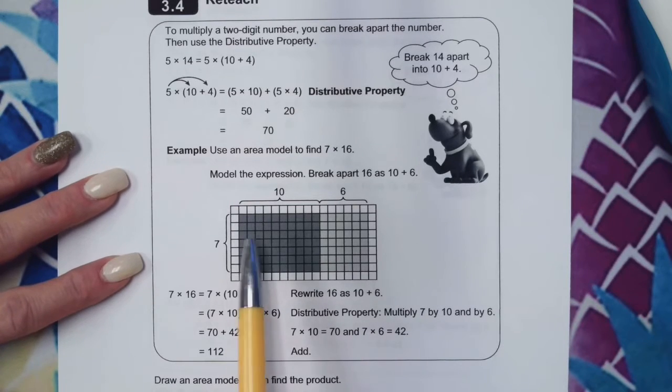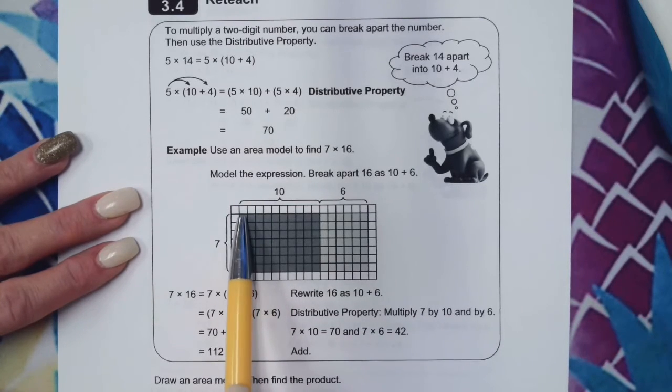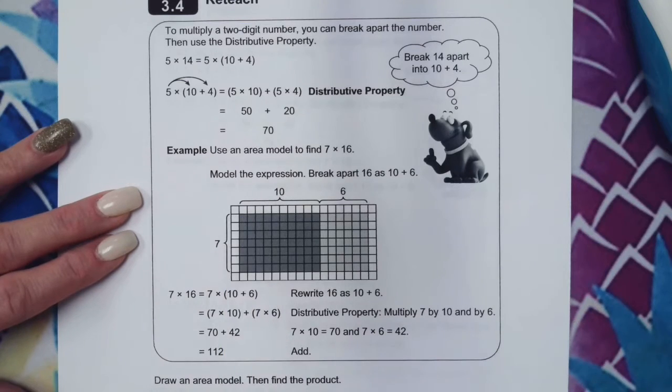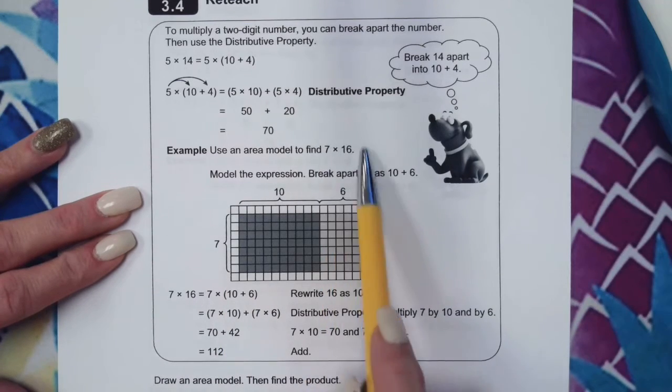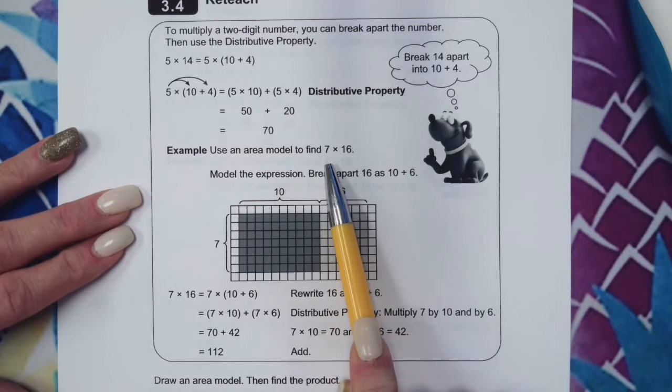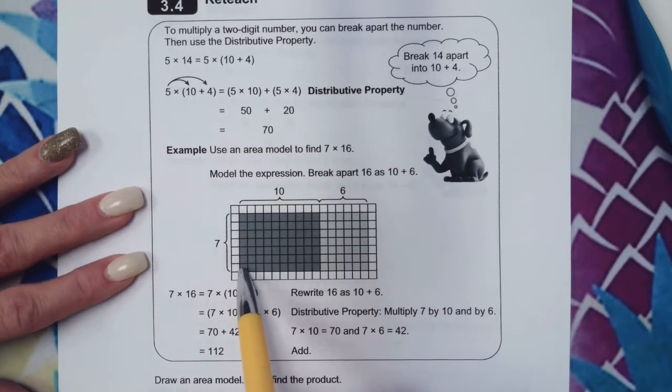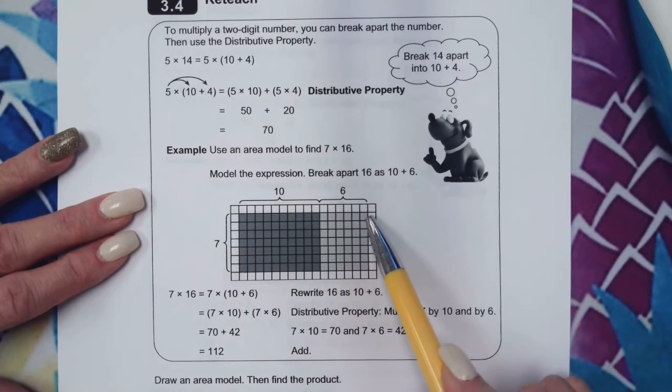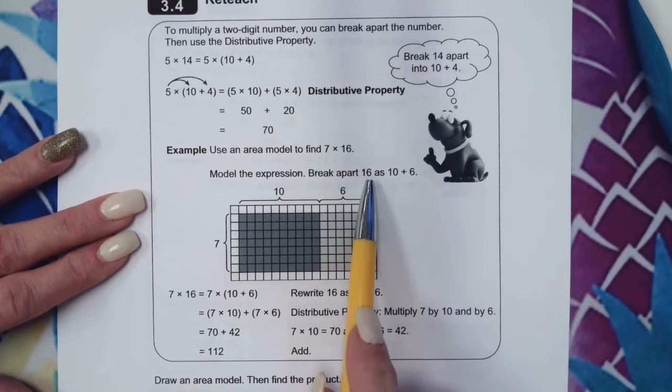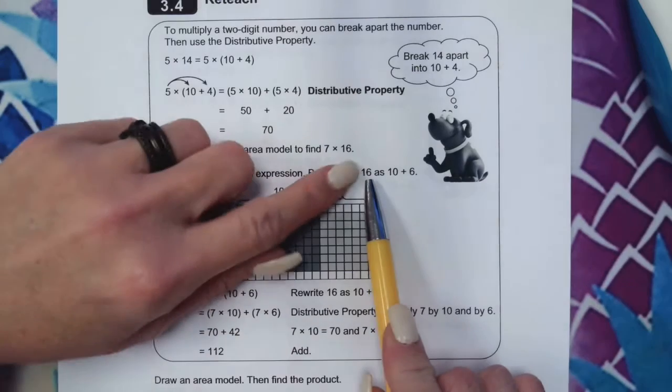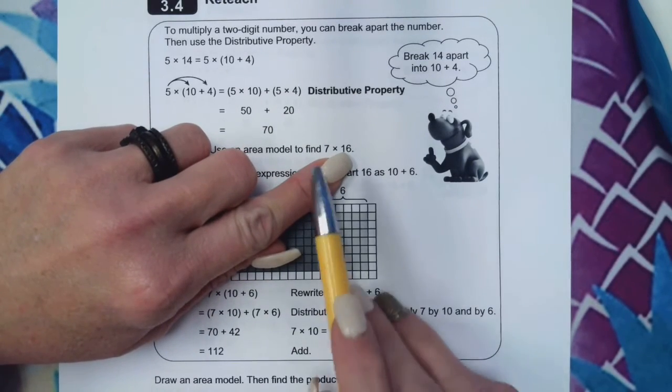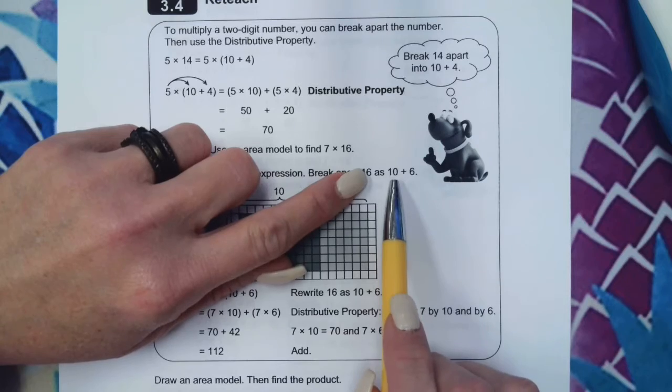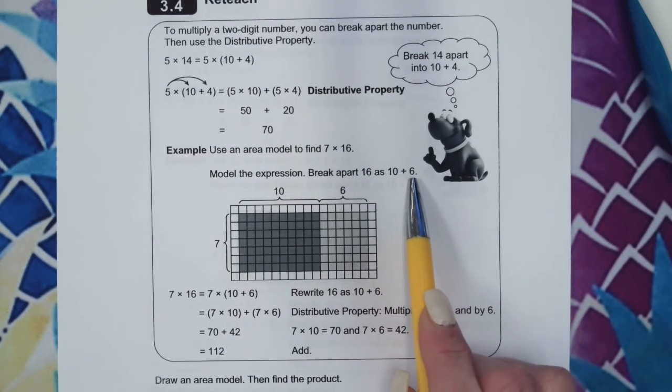When we use an area model, we are literally drawing a rectangle that has the dimensions of the problem. So our problem is 7 times 16. I'm going to need one side of my rectangle to be 7 units long and the other side to be 16 units long. What they did here was they broke apart 16 into its place values, 10 plus 6, like expanded form.